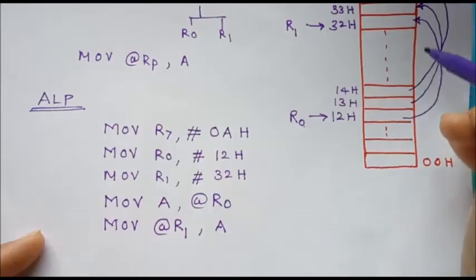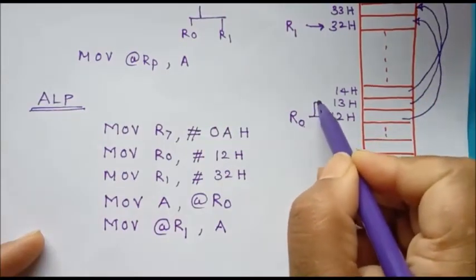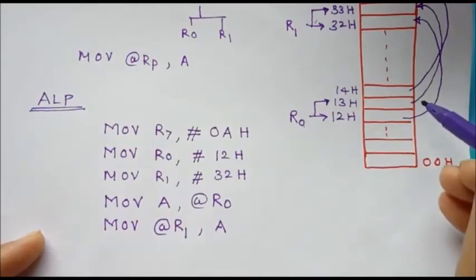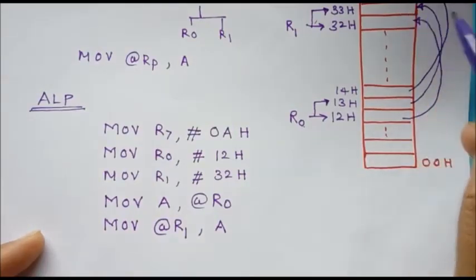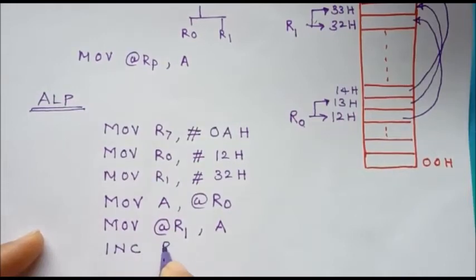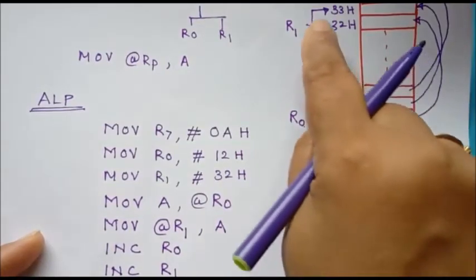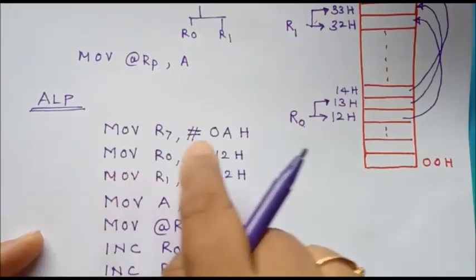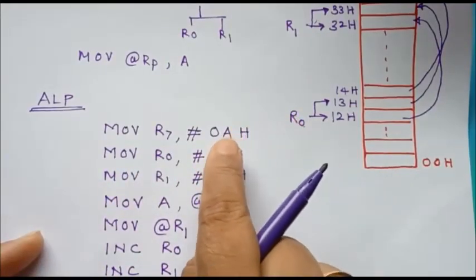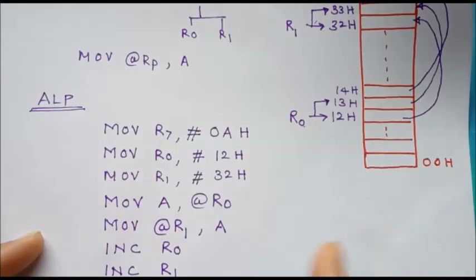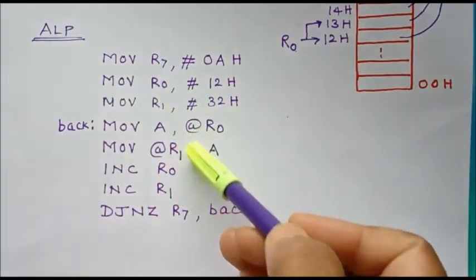We have completed the process once. Now we need to point R0 to the next source memory location and R1 to the next destination memory location, which is 33H. For that, we increment the contents of register R0 — so R0 now points to 13H — and increment the contents of register R1, so R1 points to 33H. Then we decrement the counter and check whether it is zero using the instruction DJNZ, to verify whether the process has been completed 10 times.